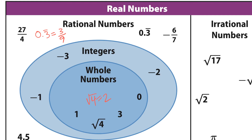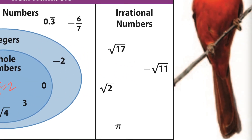4.5 is 4 and 5 tenths — mixed numbers count as fractions of integers, so all these are rational numbers. Now, the irrational numbers: you'll see lots of square roots, and pi is a real popular one. These are numbers that cannot be expressed as a fraction of integers. Pi is 3.1415926535 and so on — it keeps going.